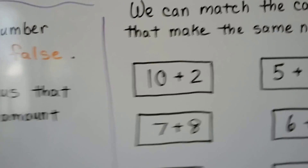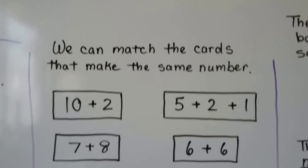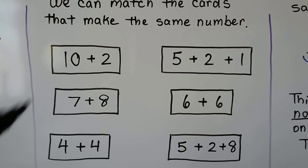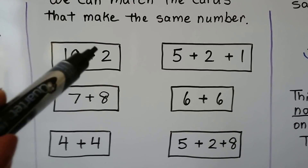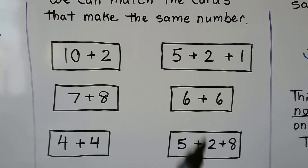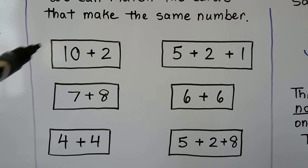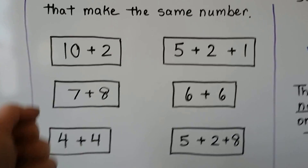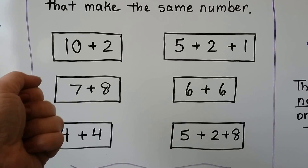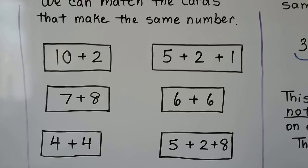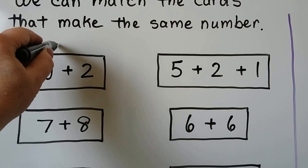We can match the cards that make the same number. We can add these inside the card, find out what they equal, and compare them to the cards on this side. 10 plus 2 — we start with the larger addend, 10, and count on 2: 10, 11, 12. This card is equal to 12.